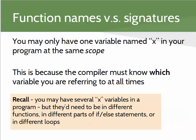To backtrack a little bit, we've already dealt with how we can declare variables and whether or not they can have the same name in our program. We know that we can only have one variable named X, for instance, at the same scope. Scope for a variable is very important and is defined by curly braces — within a function, an if statement, or a loop. The compiler needs to know which variable you're talking about.